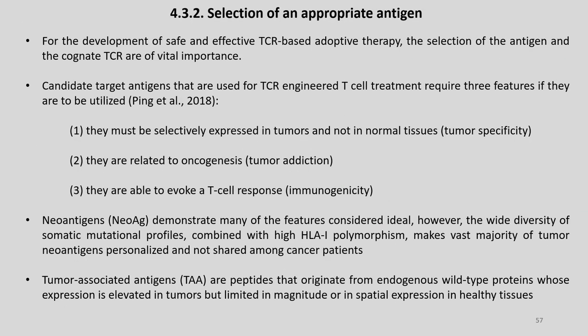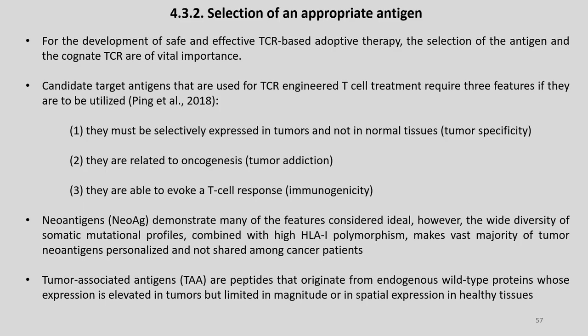For the development of safe and effective TCR-based adoptive therapy, the selection of the antigen and the cognate TCR are of vital importance. Candidate target antigens used for TCR-engineered T cell treatment require three features: they must be selectively expressed in tumors and not in normal tissues, they must be related to oncogenes, and they must be able to evoke a T cell response. Neoantigens demonstrate many of the features considered ideal; however, the wide diversity of somatic mutational profiles combined with high HLA-1 polymorphism makes the vast majority of tumor neoantigens personalized and not shared among cancer patients.